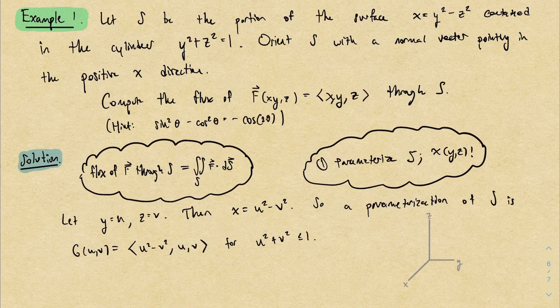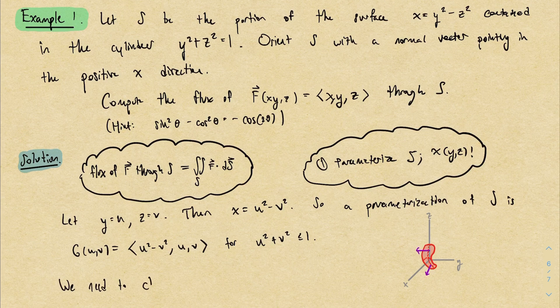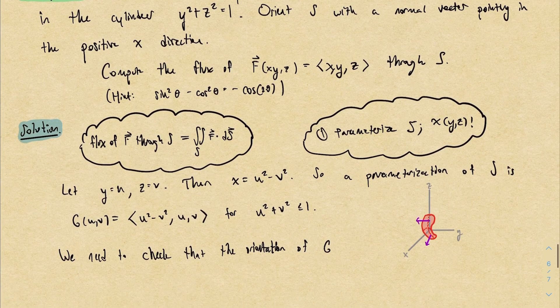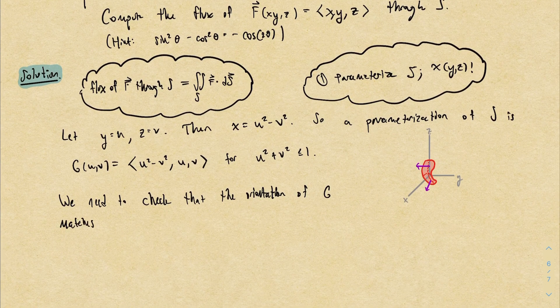The surface is a little hard to draw, but it's given by a saddle shape at the origin cut out by a cylinder — it honestly looks pretty similar to a Pringle. We're told the orientation should be given by a normal vector pointing in the positive x direction. So we need to check that the orientation of our parameterization g matches the orientation of the surface. We can do that by computing the normal vector.